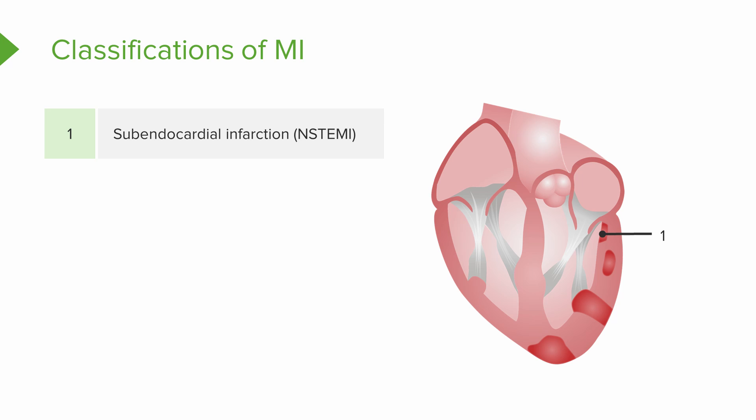Look where it is — it's the farthest in, the deepest to the tissue, but it's just subendocardial. The second one is an intramural infarction. This is also a non-STEMI, but look where it's located in the drawing — right in the center. It's not subendocardial, it's not external. It's right there in the middle. That's an intramural infarction.